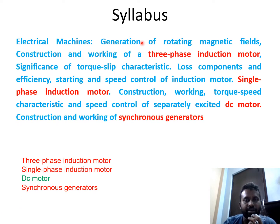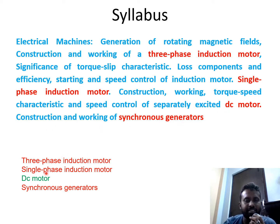The syllabus of Unit 4 covers: Generation of Rotating Magnetic Fields, Construction and Working of Three-Phase Induction Motor, Significance of Torque-Slip Characteristics, Loss Components and Efficiency, Starting and Speed Control of Induction Motor, Single-Phase Induction Motor, Torque-Speed Characteristics and Speed Control of Separately Excited DC Motor, and Construction and Working of Synchronous Generator. The total syllabus can be classified into four categories: Three-Phase Induction Motor, Single-Phase Induction Motor, DC Motor, and Synchronous Generator.